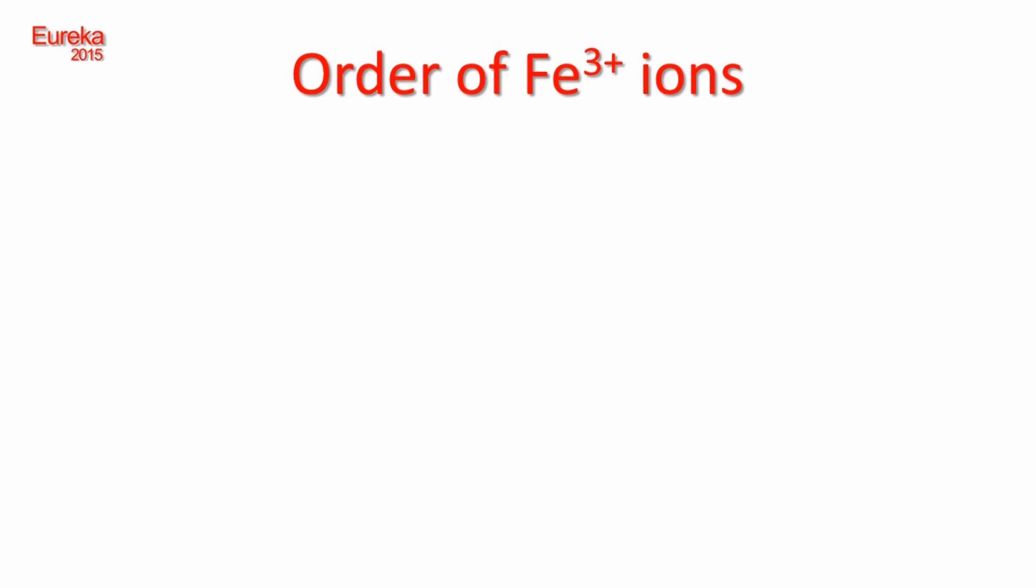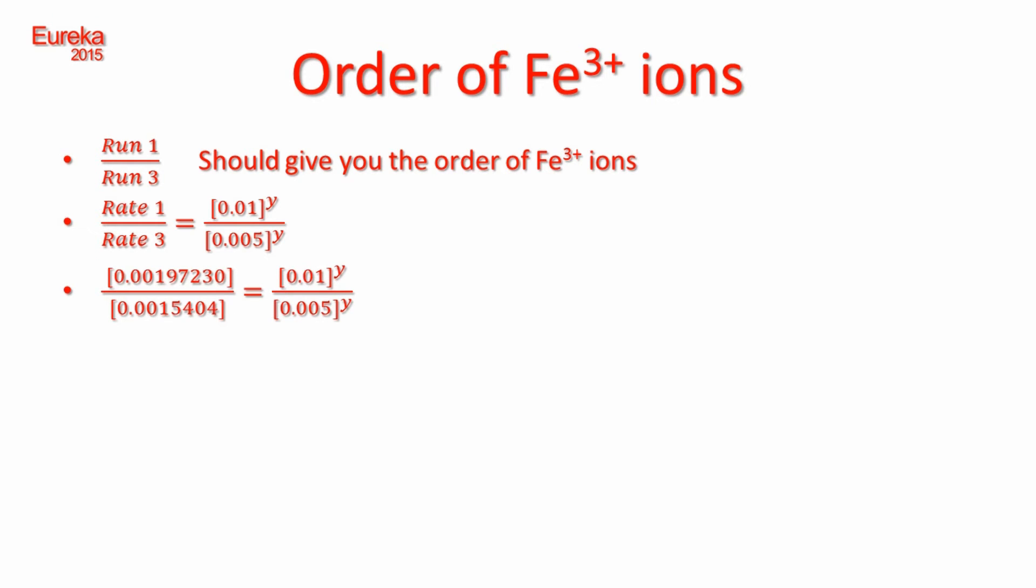To determine the order of Fe3 plus ions, we will compare trials 1 and 3. The concentrations of the iodide ions are the same for these two trials. Hence, it will not have an effect on the rate of the reaction. The concentration of Fe3 plus ions in the third trial is half that of the first.